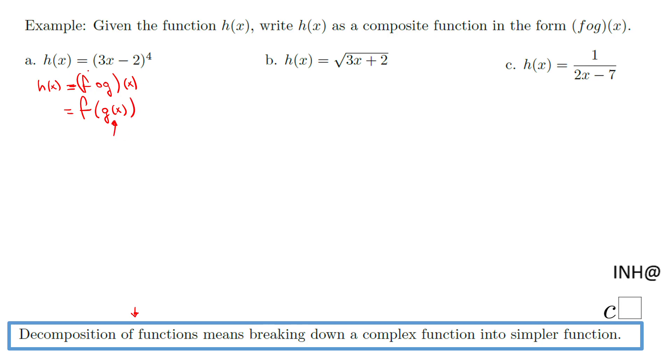That tells me right away this is my g(x), the inside function. So g(x) in our case in part A is 3x minus 2. The question is, what will be f(x)? f(x) is the outside function, the outer function, and that will be represented by this exponential function, the power of 4.